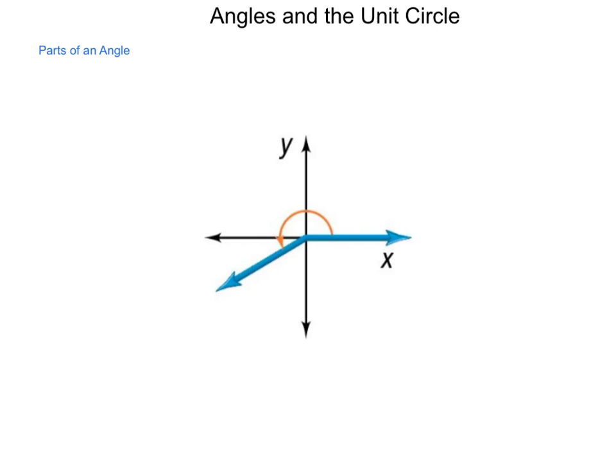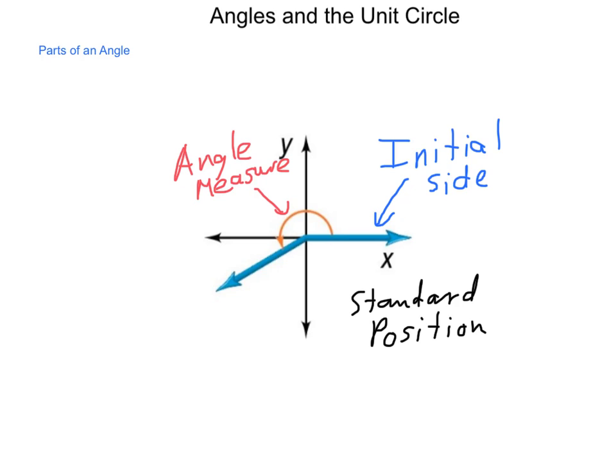So let's begin with the parts of an angle. On this diagram, this angle is in what's called standard position. For an angle to be in standard position, its initial side needs to be along the positive x-axis, and it will open counterclockwise around the graph, giving us the angle measure out to what is known as the terminal side, or where the angle ends.